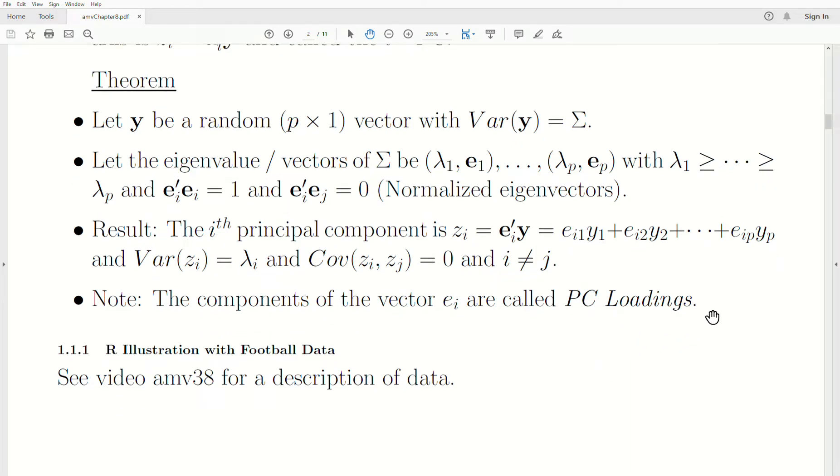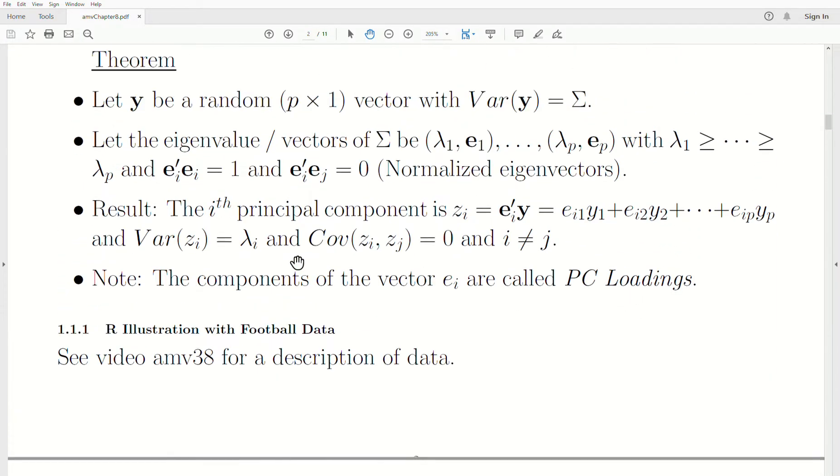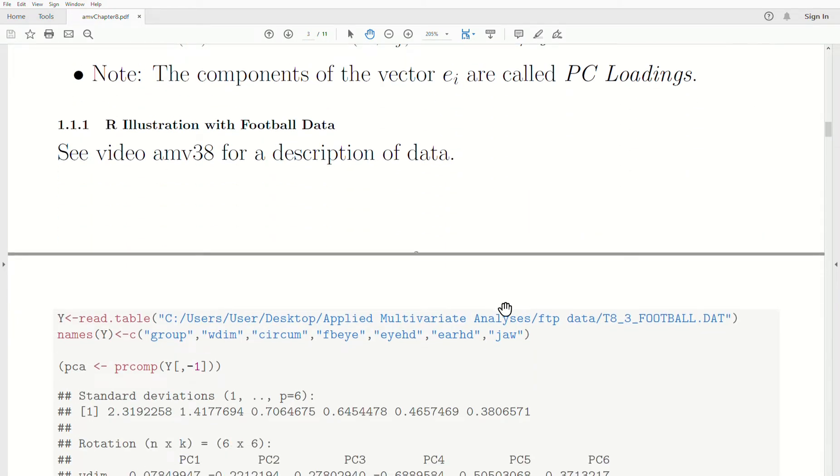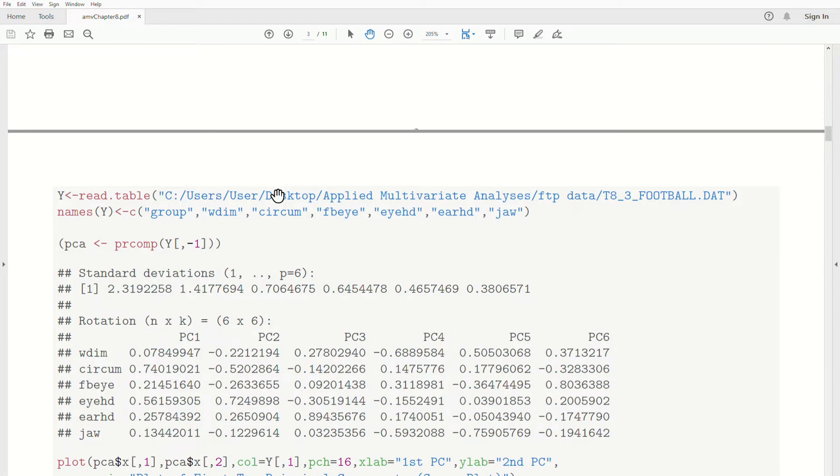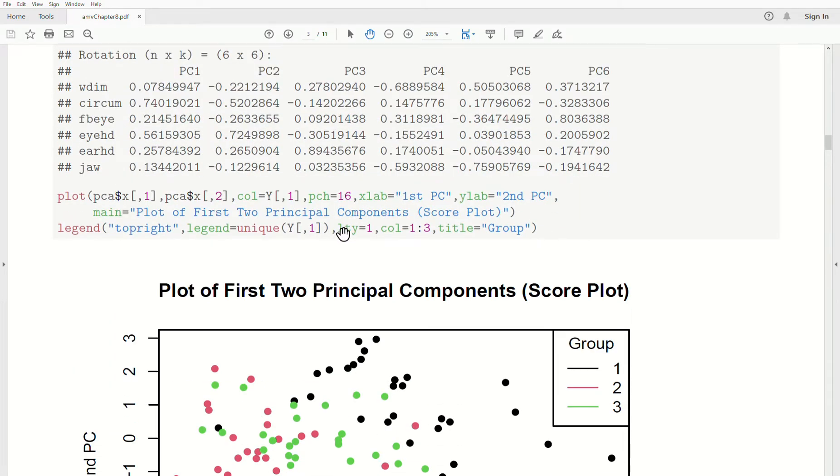Let's look at an illustration. I'm going to point you back to video MV38 in the Applied Multivariate Analysis playlist, because the actual data is not important for this video—we'll cover it in more detail in the next videos. It deals with football data examining injuries associated with football helmets. I just want to show you the plots to give you a feel of what we're going to do.